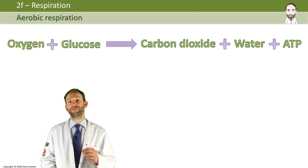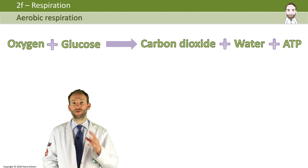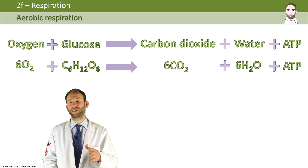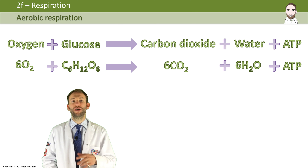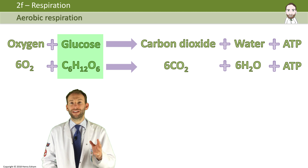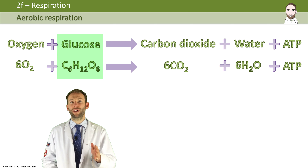You also need to know the chemical symbol equation. Oxygen is O2, carbon dioxide is CO2, and water is H2O. For glucose, you have to remember it as a pattern: C6H12O6.